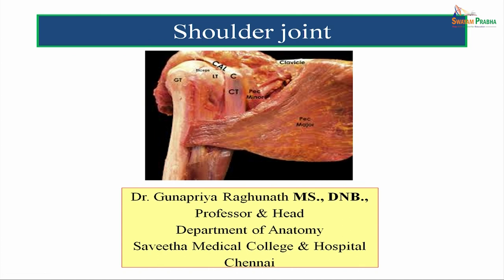In today's session, we will be discussing about the shoulder joint, one of the most important joints in the human body. What you are seeing here in the picture is the shoulder joint, where you can see the scapula, the glenoid cavity of the scapula, and the articulating hemispherical head of the humerus. Let us move on to the topic now.